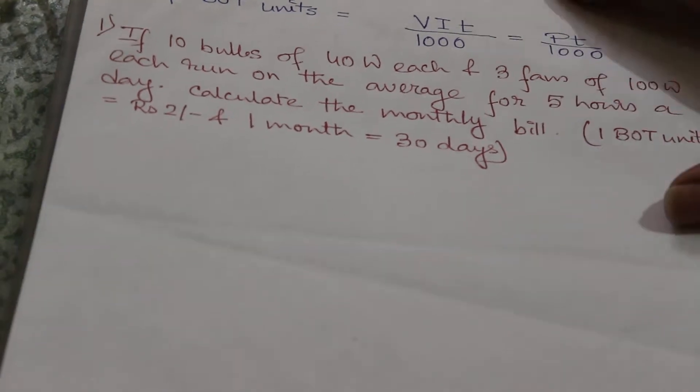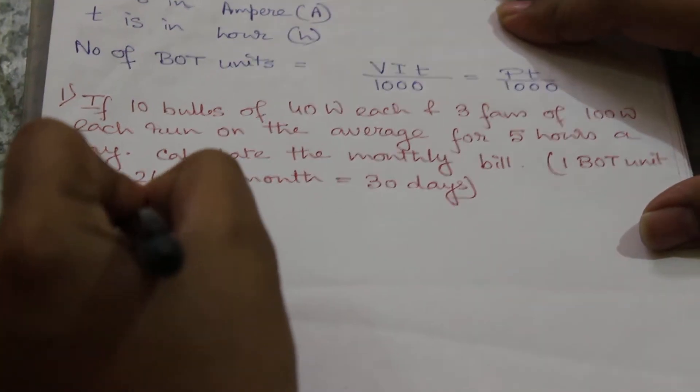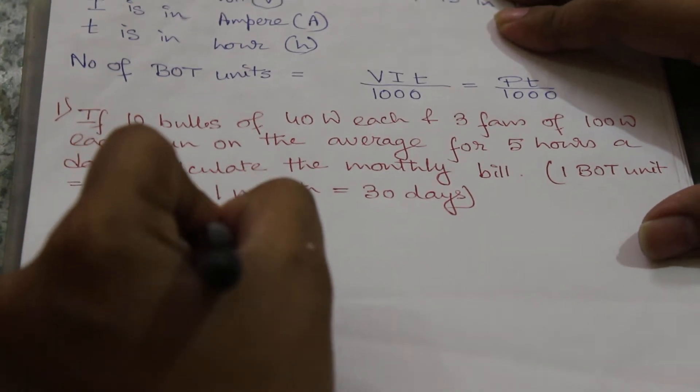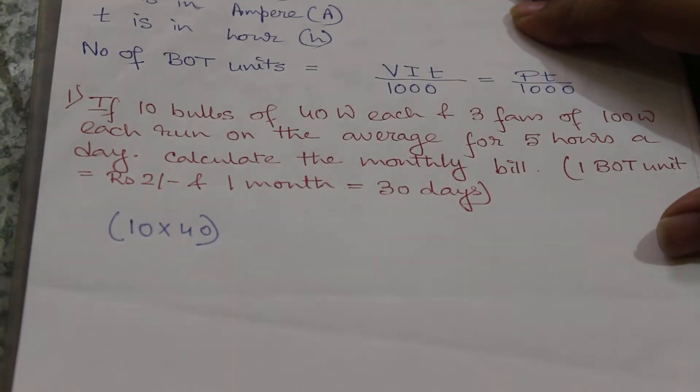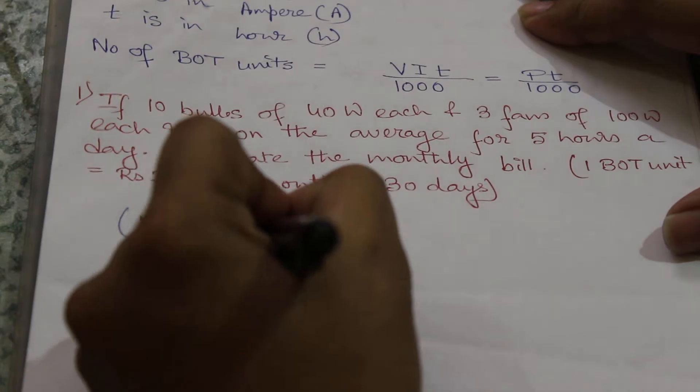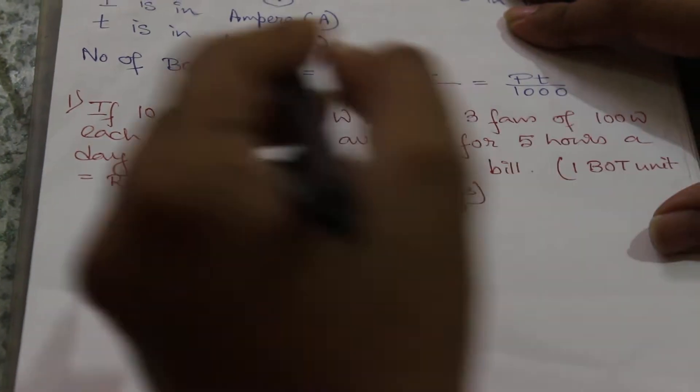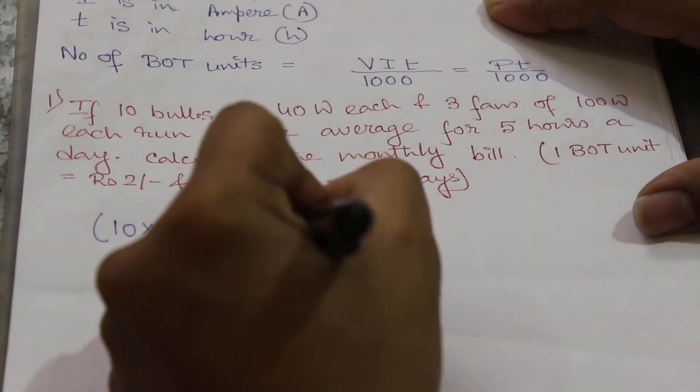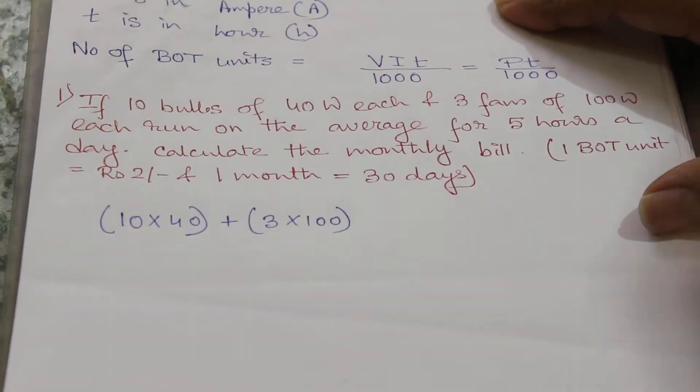So first we will do that 10 bulbs of 40 watt each. So we will calculate the total wattage. 10 x 40 plus 3 fans of 100 watt each, so it will be equal to 3 x 100. This is the total wattage.